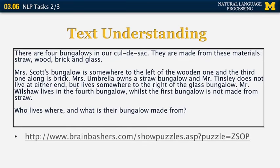Here's another example of text understanding — a word puzzle that used to appear on GRE tests. There are four bungalows in a cul-de-sac made from four different materials. You have constraints like: Mr. Scott's bungalow is somewhere to the left of the wooden one, and the third one along is brick. Then you have to answer questions like who lives where and what is their bungalow made from. It takes sophisticated NLP to solve puzzles like this.